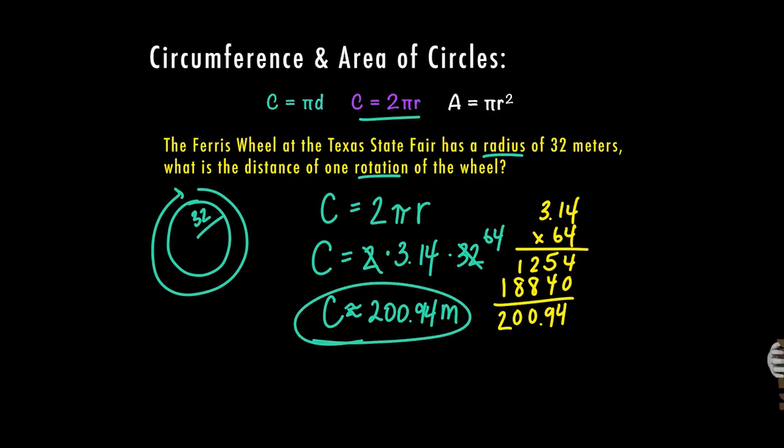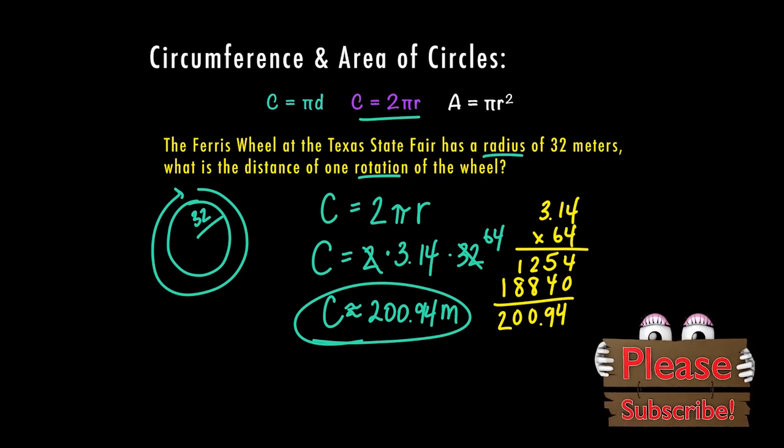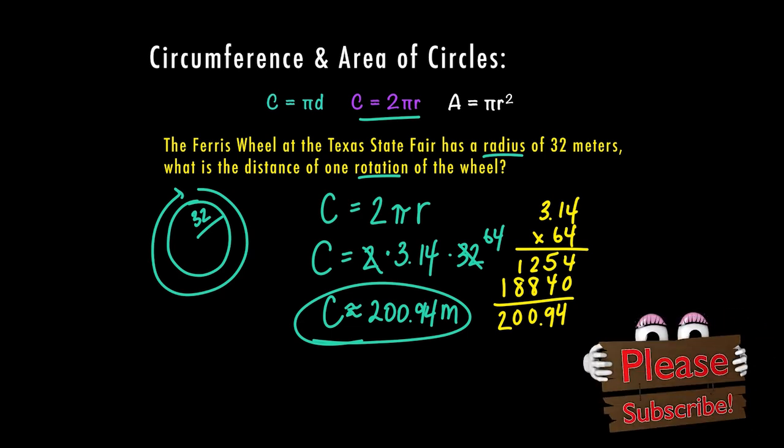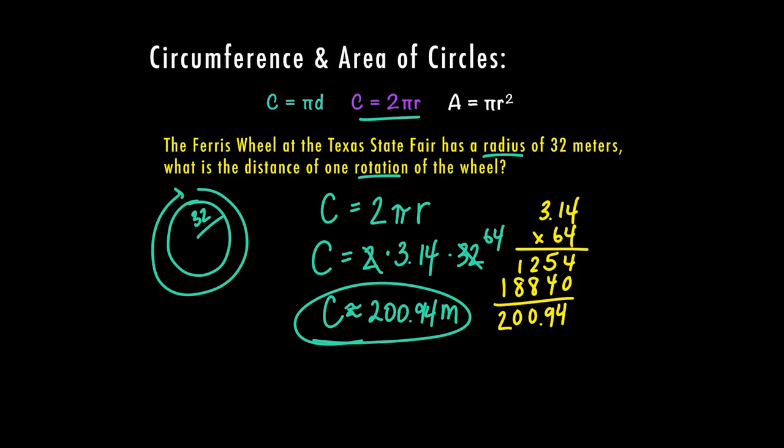That means that the circumference is approximately 200.94 meters around this Ferris wheel. So it's going to go around the Ferris wheel. The circumference is 200.94 meters. Knowing the circumference could be helpful in figuring out maybe how long it would take for the Ferris wheel to go around one rotation if you knew the speed of the Ferris wheel. So there are reasons why you would need to know the circumference that would help with solving other problems.